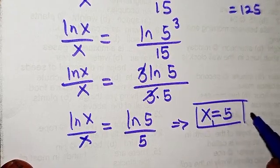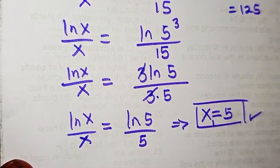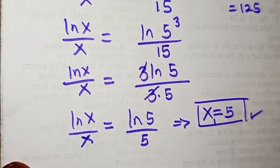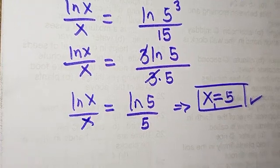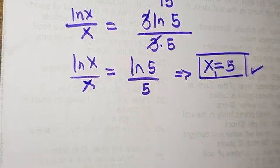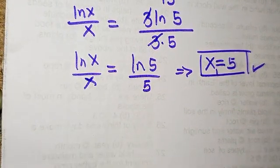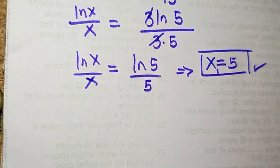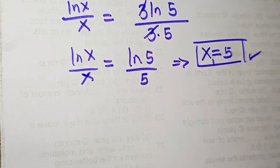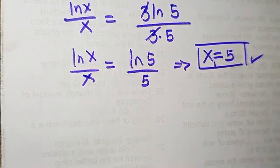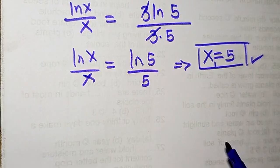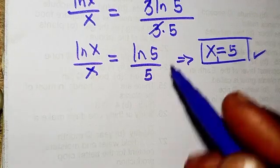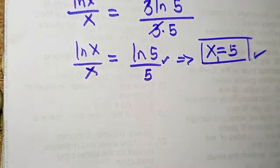This implies that x equals 5 — that is our x₁, the first possible value of x, which is a positive integer. The question asks for x in the set of real numbers, so we need to go further and find the second solution.